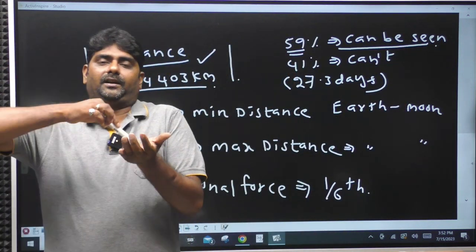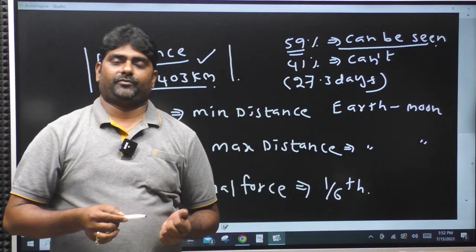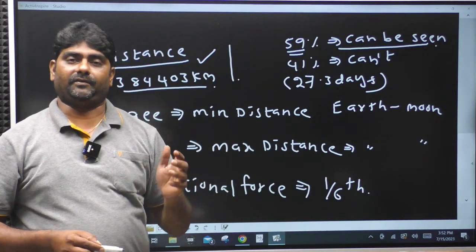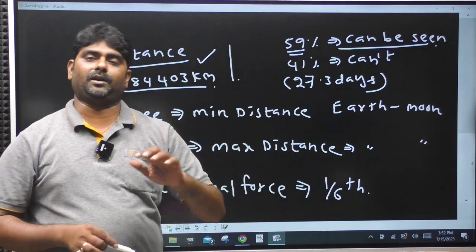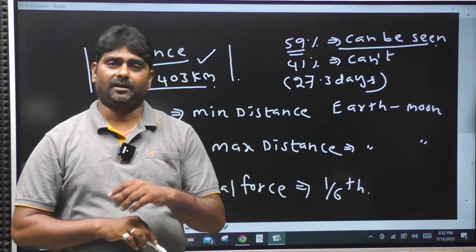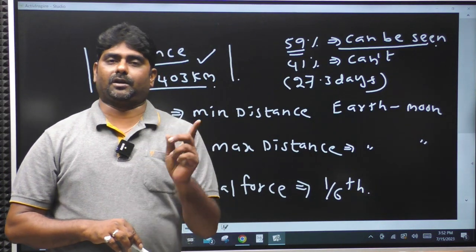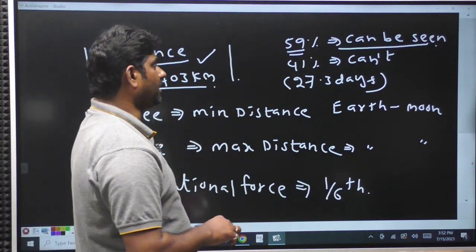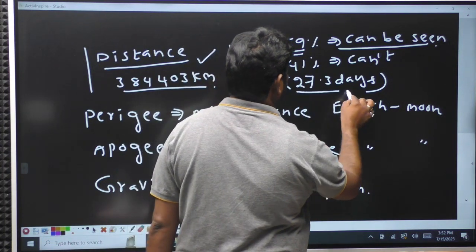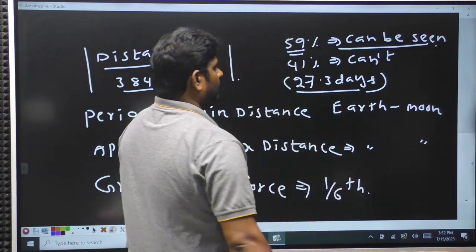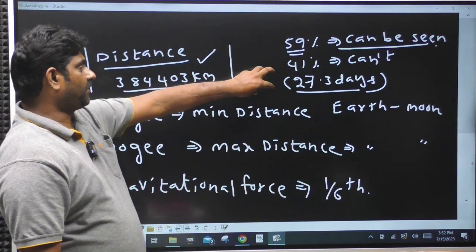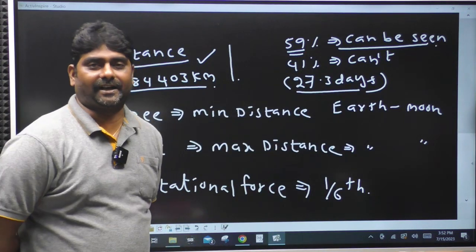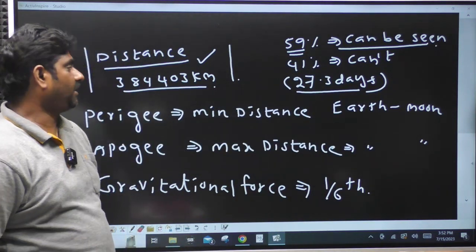Only 15% of the lunar surface area can be seen from the Earth, even on a full moon day. The Moon's rotation and revolution period is 27.3 days. So 41% of the moon's surface area cannot be seen from the Earth.